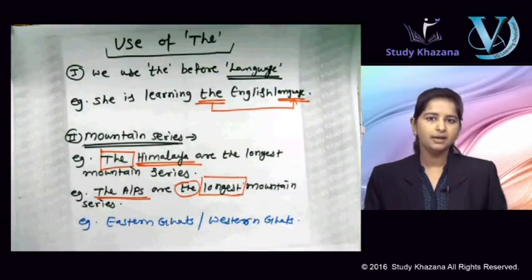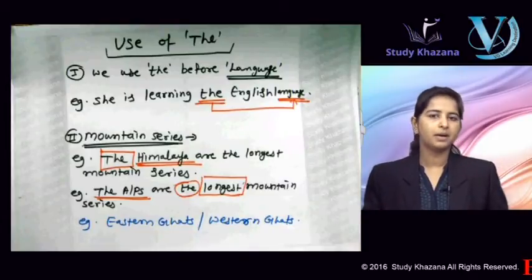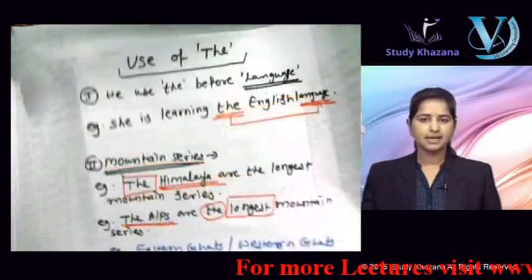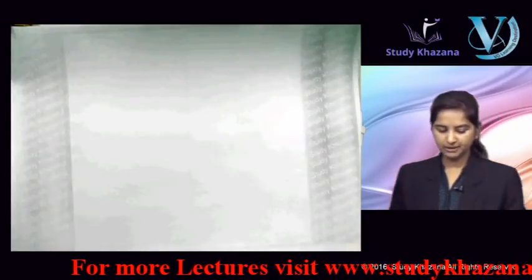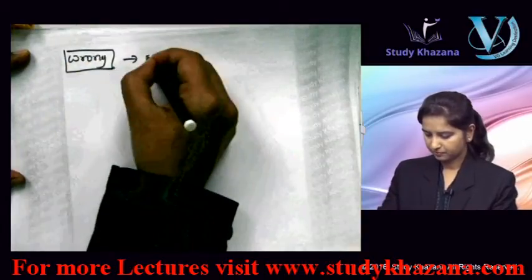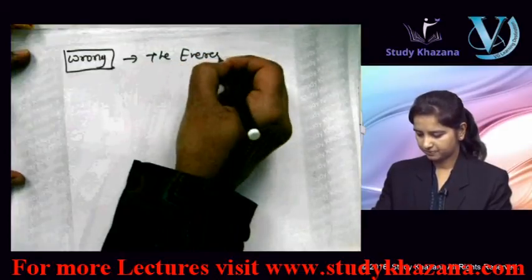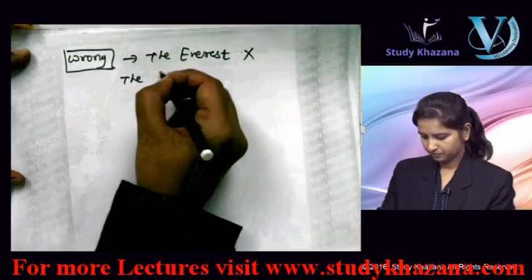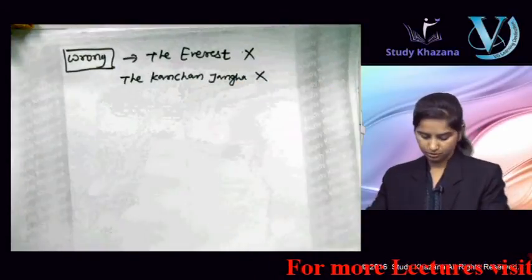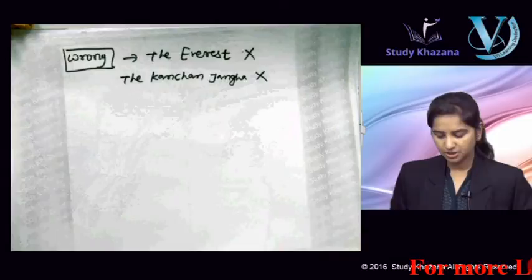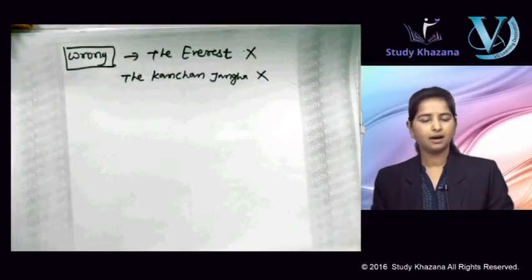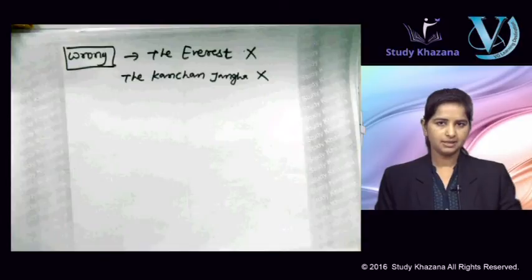Sirf jahaan pahaadon ke naam honge — jahaan pahaadon ki individual identity hogi — wahaan hum article 'the' ka use nahi karenge. Is rule ko aapko dhyan dena hoga. For example, what can be wrong: 'The Everest' — wrong. 'The Kanchanjangha' — wrong. 'The Mount Everest' — bilkul galat. Jahaan sirf in ke naam ki baat ho, wahaan hum 'the' ka use nahi kar sakte.